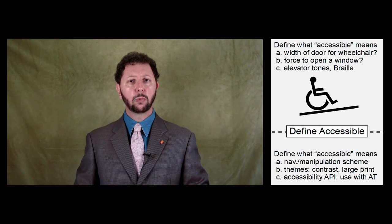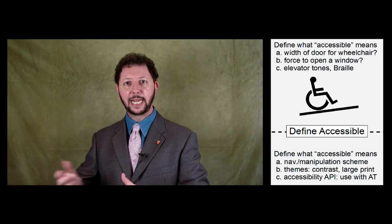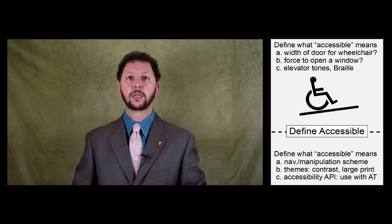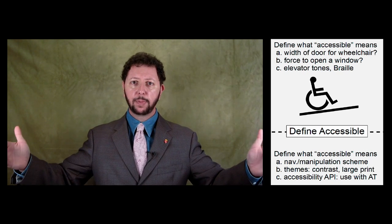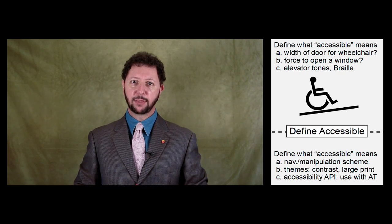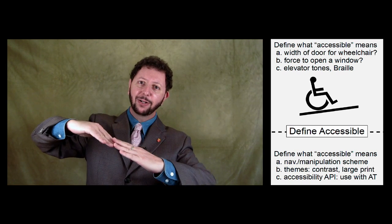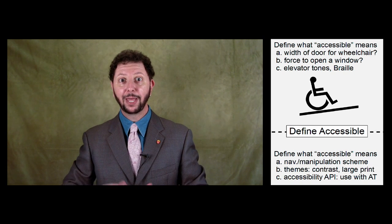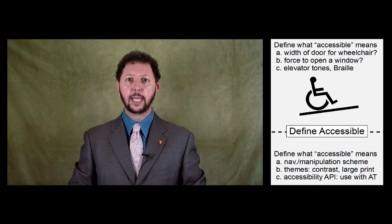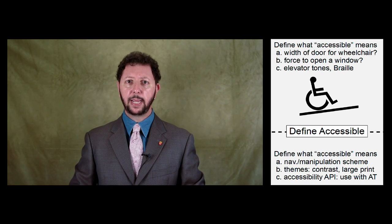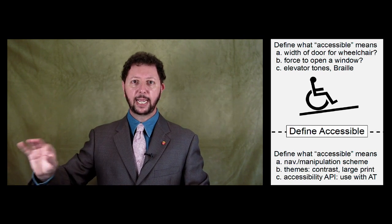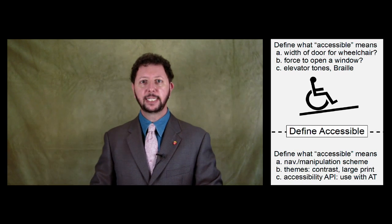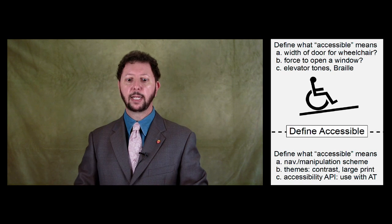In the physical world, the first step in creating something that's accessible is defining what accessible means. How wide should a door be in order for a wheelchair to get through it? What is the angle of the wheelchair ramp? If we have an elevator, what tones should it make? Where should we indicate braille? What additional tactile symbols should we use to indicate the main floor in an elevator?